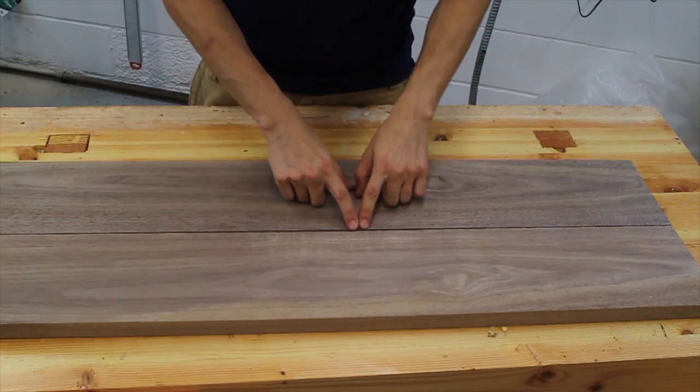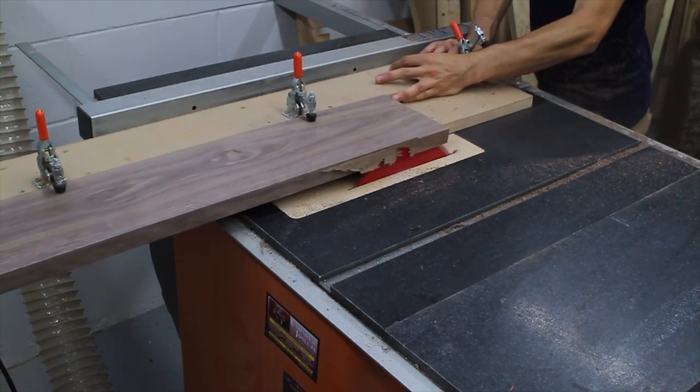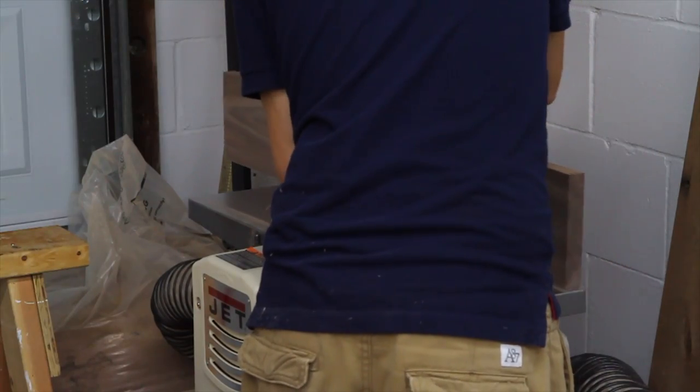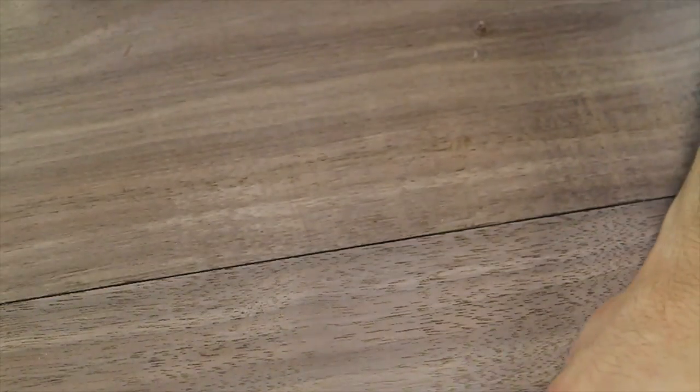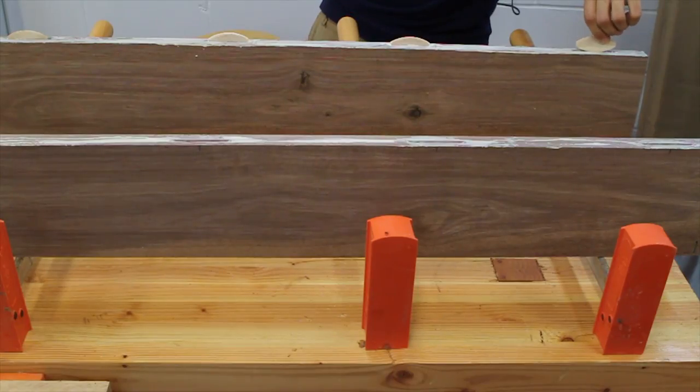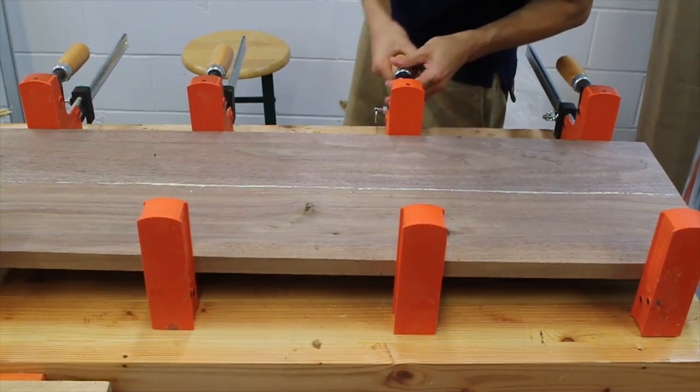Next, I started working on the top. The boards need to be edge jointed to get the seam nice and tight. Take a look and see how it looks. Look at that. Back then, every panel had to have biscuits, so I added some of those with some glue and clamped the top.